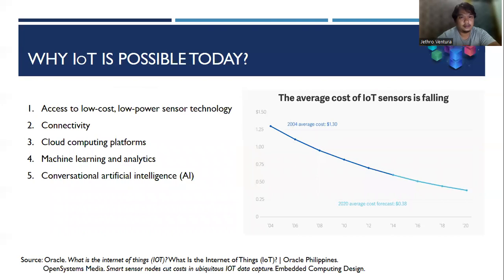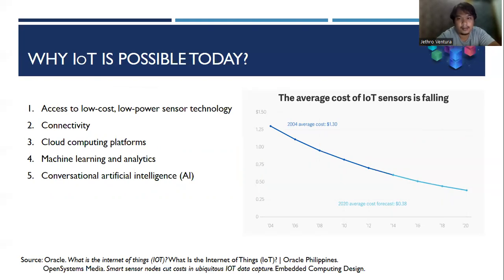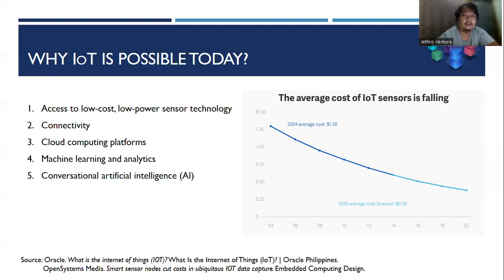Next is: why is IoT possible today? First is access to low-cost, low-power sensor technology. As you can see on the graph, as time passes by, the cost per sensor that IoT uses is continually decreasing. Affordable and reliable sensors are making IoT technology possible for more manufacturers.